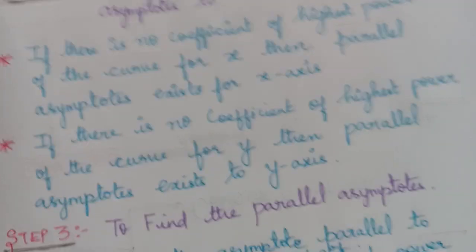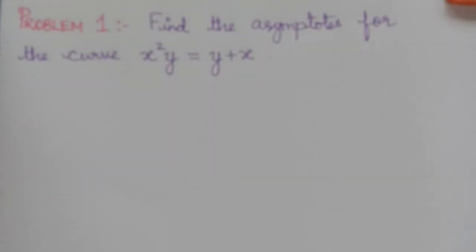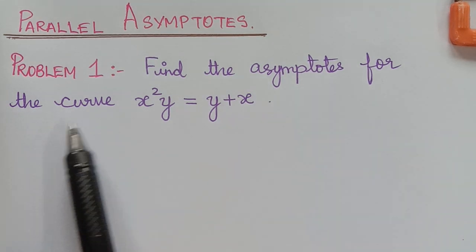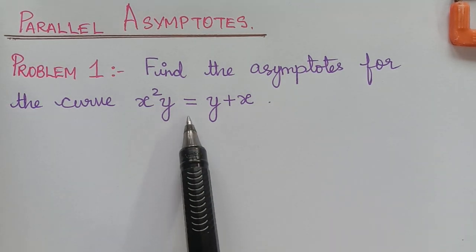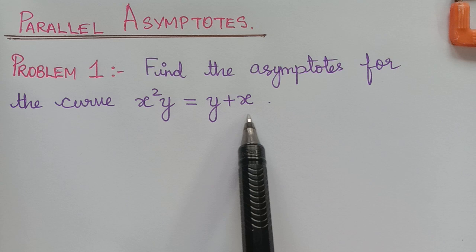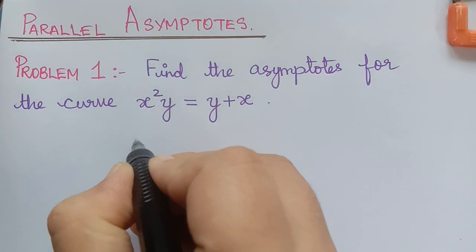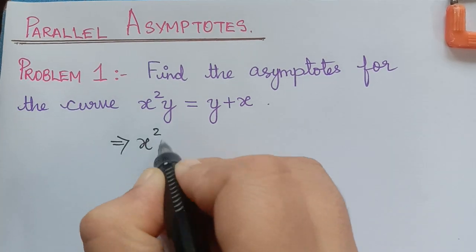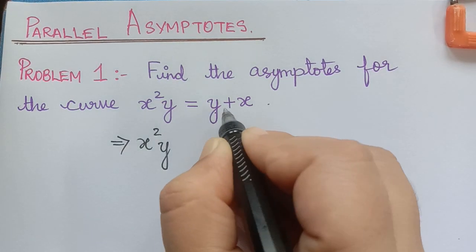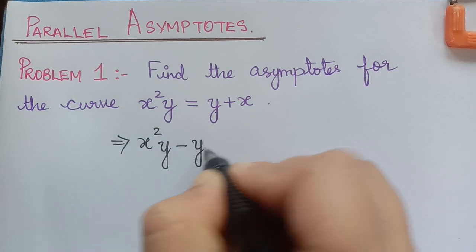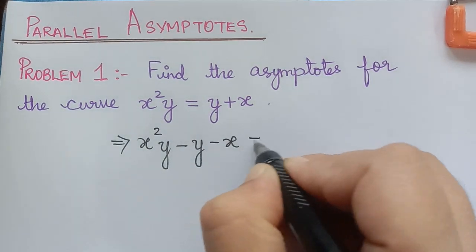We shall now consider a problem and solve for asymptotes for that particular problem. Find the asymptotes for the curve x²y = y + x. As a first step, we shall rewrite this equation. This equation is x²y, bringing y and x to the left side of the equation, it becomes x²y − y − x = 0.